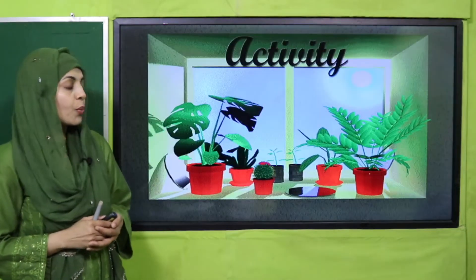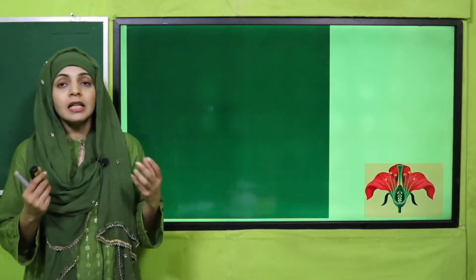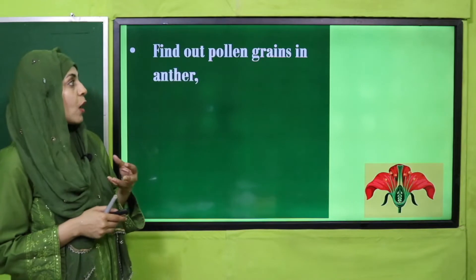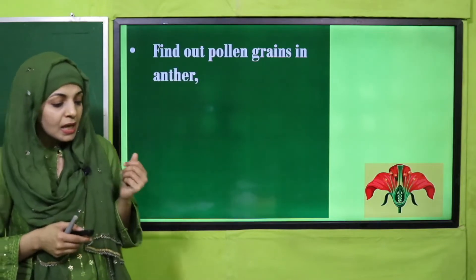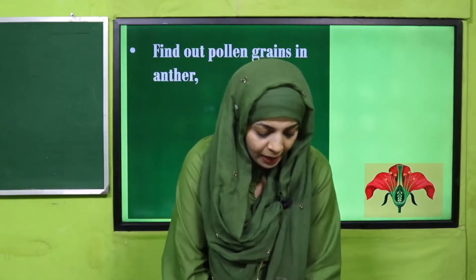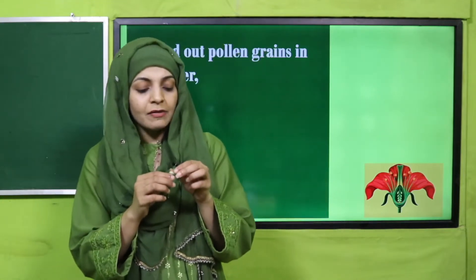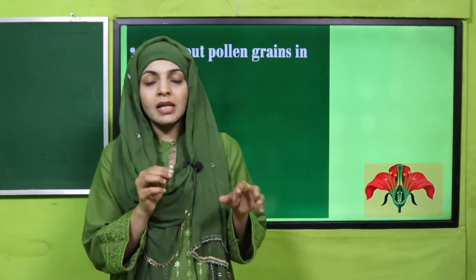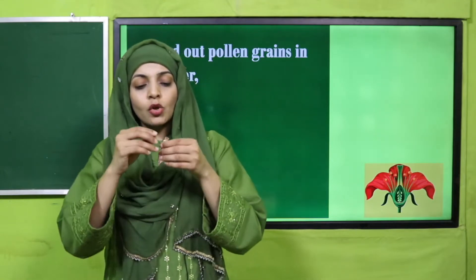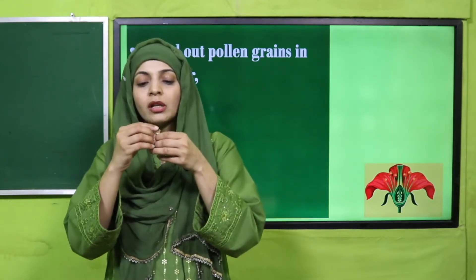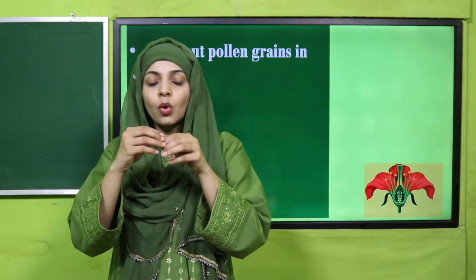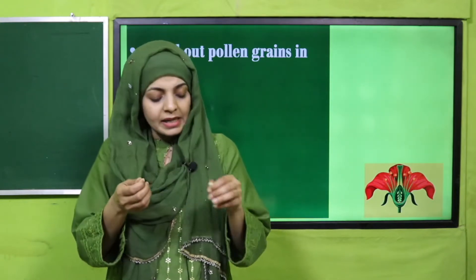Let's start the lecture with an activity. For this activity you need the flower again, which you have to practically perform. First, you need to find out the pollen grains in the anther. The anther and filament together are collectively called the male part, and they are called the stamen. The top sack-like part on the filament is called the anther. Observe it — inside it they feel very powdery.